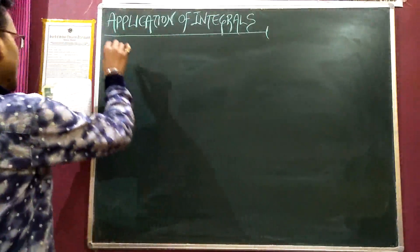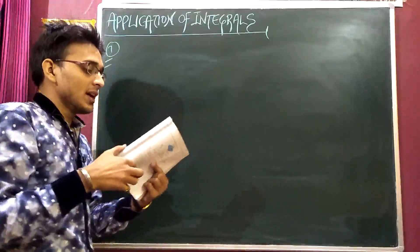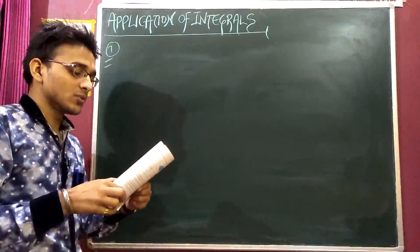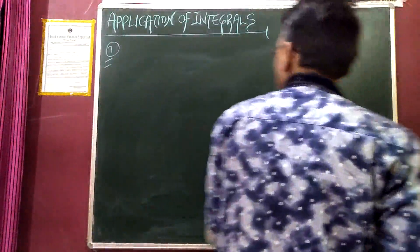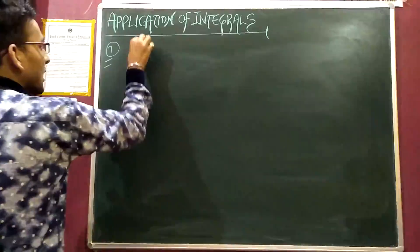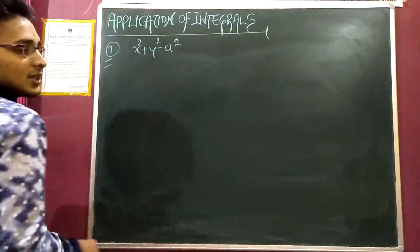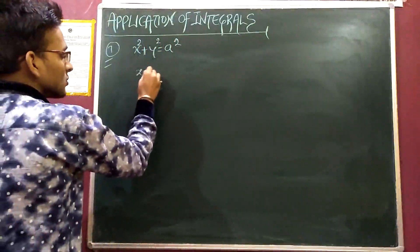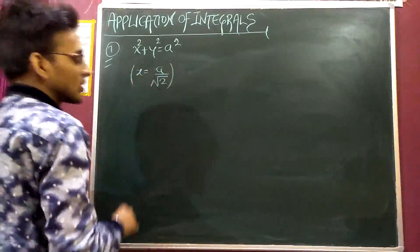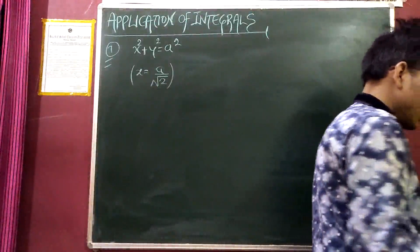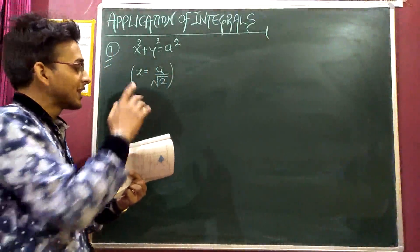Find the area of the smaller part of the circle x squared plus y squared is equal to a squared, cut off by the line x is equal to a upon root 2. You have been told that x squared plus y squared is equal to a squared, and the line is x = a/√2.